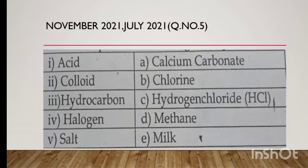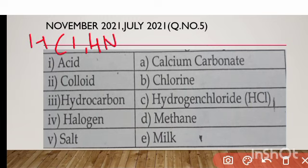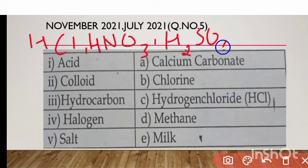Here, the first one is acid. Acid means it is HCl, HNO3, or H2SO4 — these are acids. So in the options given, HCl — hydrogen chloride — is the acid.